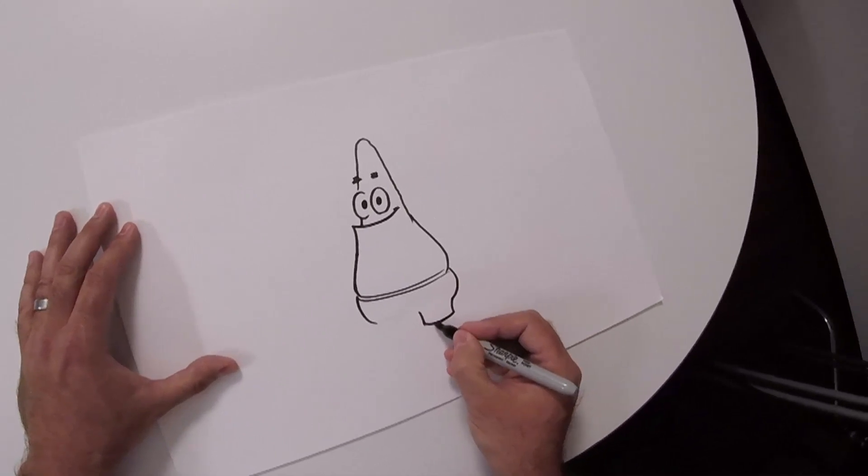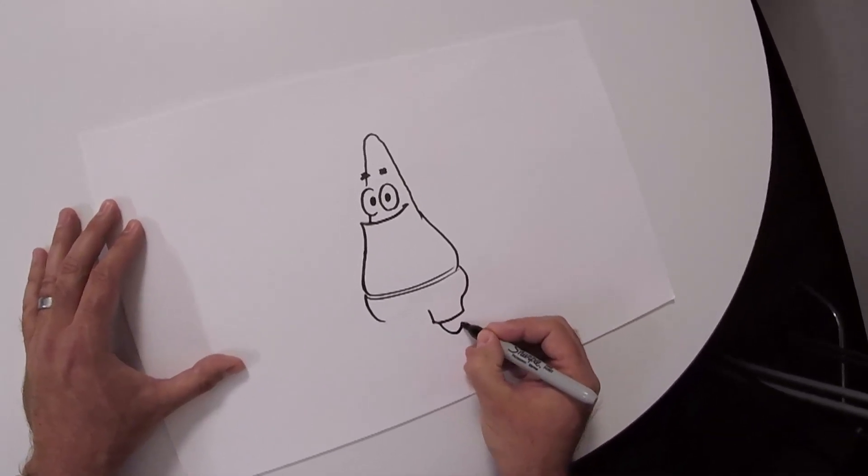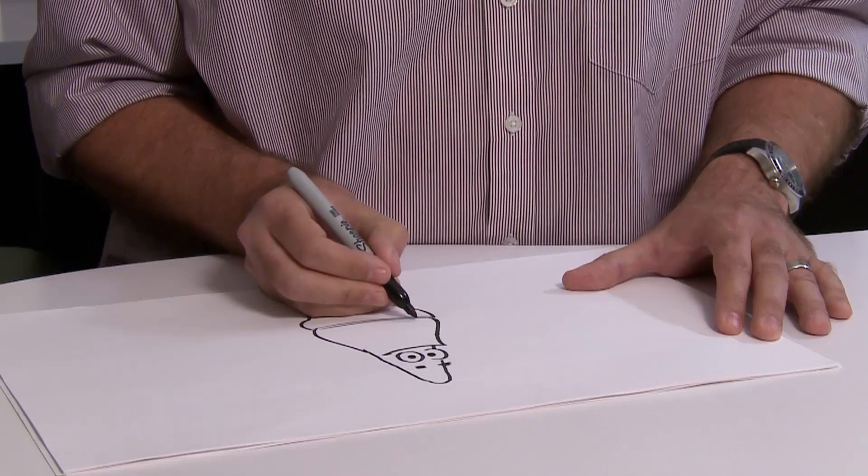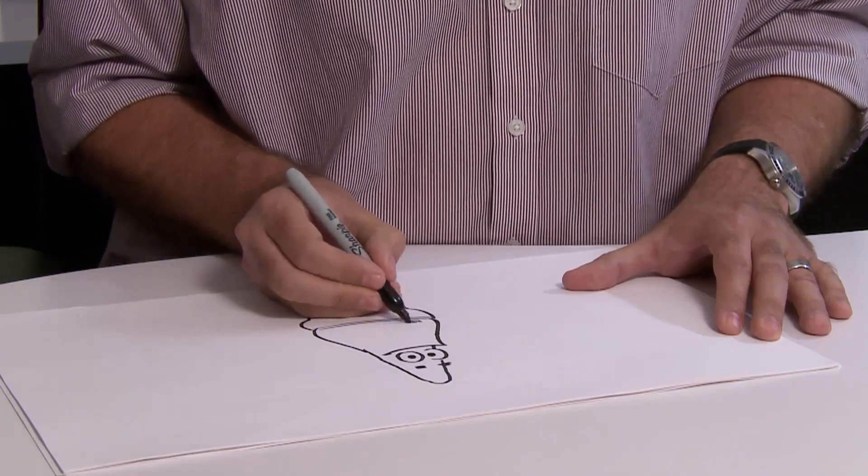And we'll do his pant legs. Remember, he's a starfish, so his feet are just pointed like that. His belly button is like two little U's. Look at that.